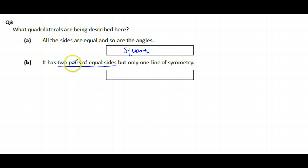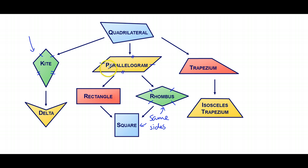Let's go back. Two pairs of equal sides, but only one line of symmetry. So only one mirror line. Let's have a look. Well, the rhombus we could cut.